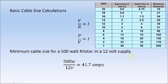We've done our calculation: 41.7 amps. We need to find a cable that suits. The 4mm cable has a maximum of 38 amps — that's too small, so we need to go to the next one up. We end up with a 6mm cable with a maximum current carrying capacity of 51 amps. That will carry that load comfortably.